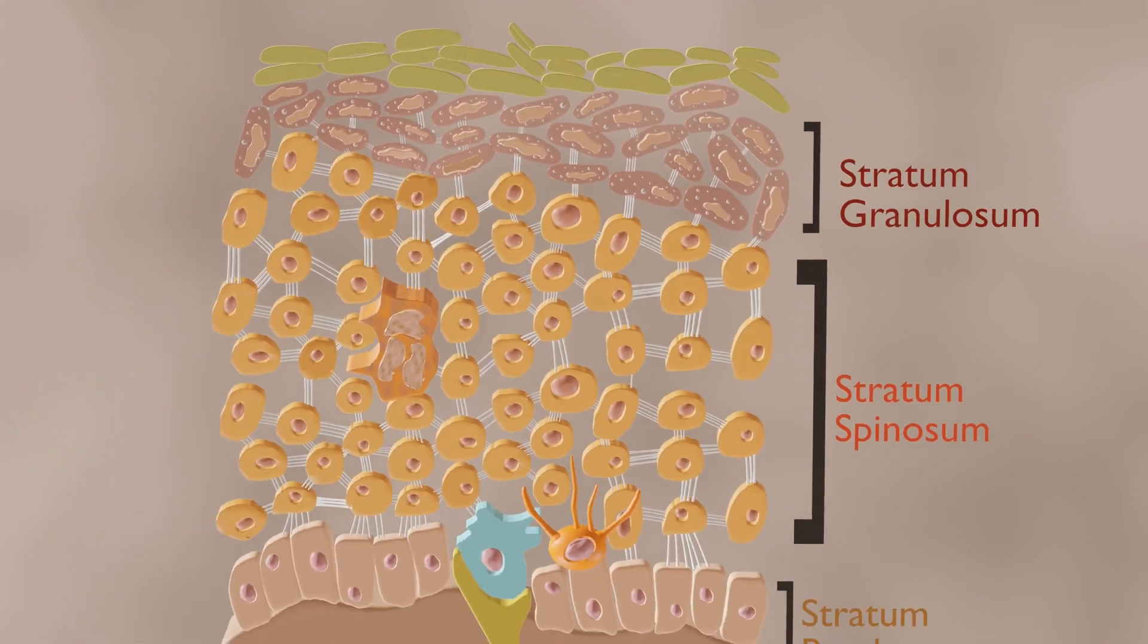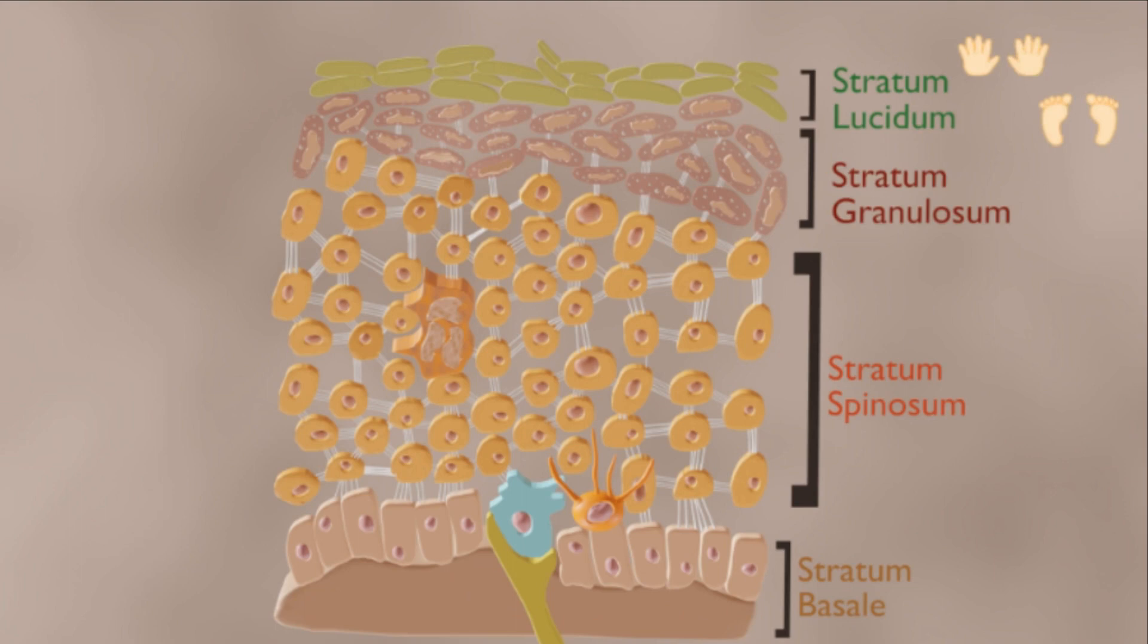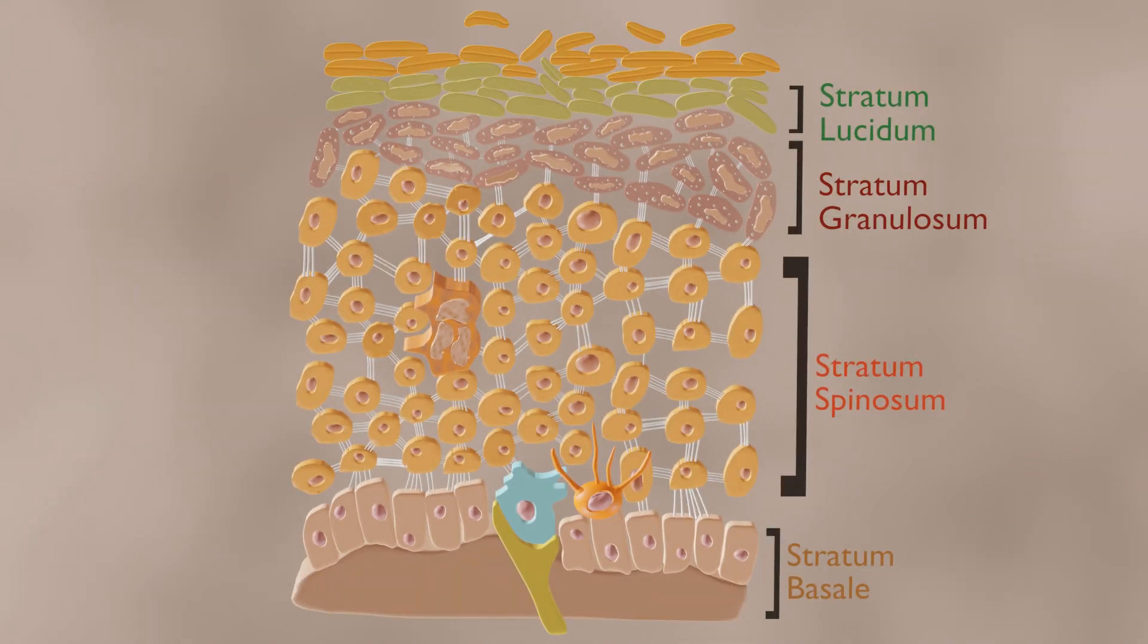Stratum lucidum has 2-3 cell layers, present in thicker skin found in the palms and soles. Stratum corneum has 20-30 cell layers and is the uppermost layer, made up of keratin and horny scales made up of dead keratinocytes, known as anucleate squamous cells. Within this layer, the dead keratinocytes secrete defensins which are part of our first immune defense.